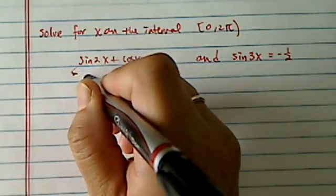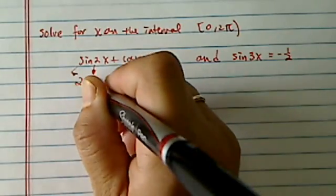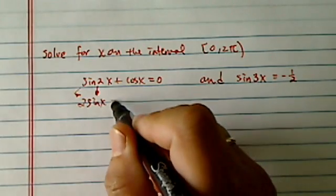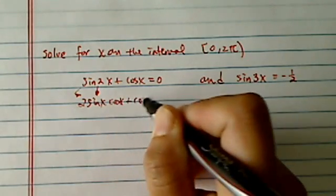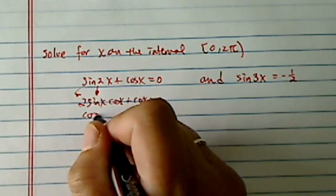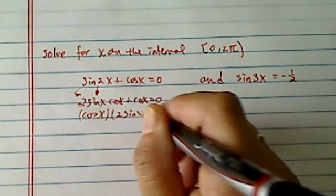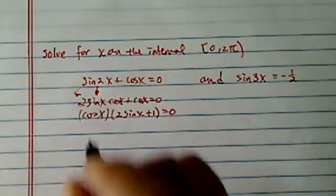On the first one, what we needed to know is that sin 2x is 2 sin x times cos x plus cos x equal to 0. And then here, factoring it out, we have 2 sin x plus 1 equal to 0.